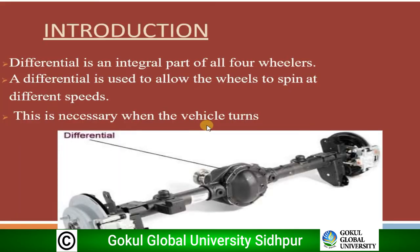What is a differential? Differential is an integral part of all four wheelers. It is used to allow the wheels to spin at different speeds, which is necessary when the vehicle takes a turn. Basically, a differential is a mechanical device capable of transmitting torque and rotation through three shafts — one as input and the other two as outputs — at different speeds as the vehicle makes a turn. It allows each driving wheel to rotate at different speeds while supplying equal torque to each of them.